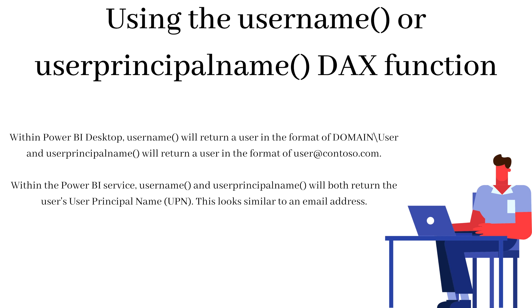Within the Power BI service, username and user principal name will both return the user's user principal name, which is UPN. This looks similar to an email address. So my advice is to always use user principal name; otherwise, you may encounter many challenges while implementing row-level security.